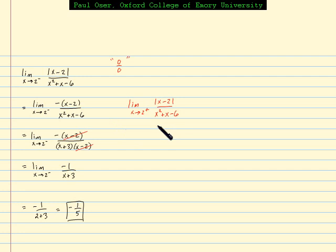What is the value of this limit? Well, do you see this is going to be very similar to the one we just worked? The only difference is, when we start off asking the question, what is the effect of the absolute value? When x is approaching 2 from the right, now we're talking about values of x that are slightly larger than 2, like 2.001.